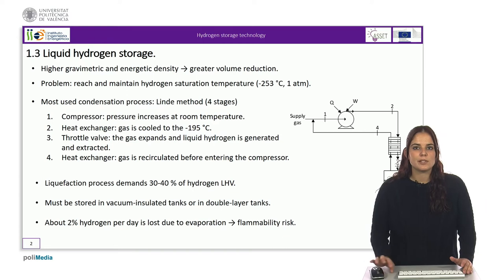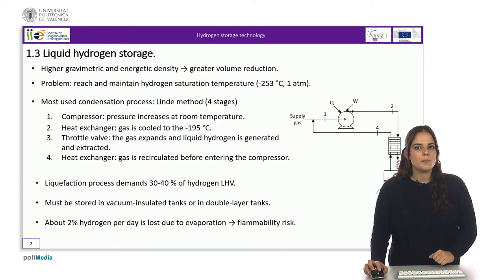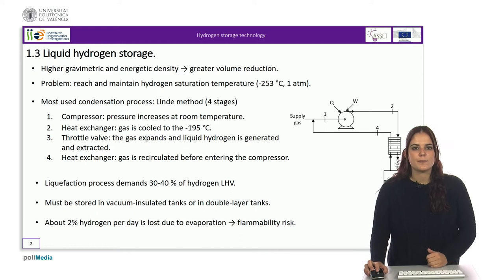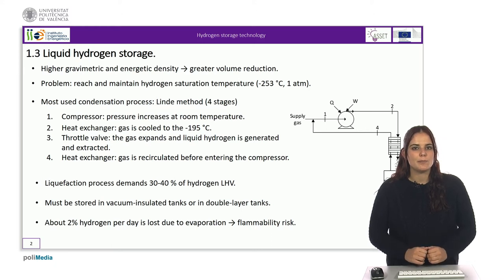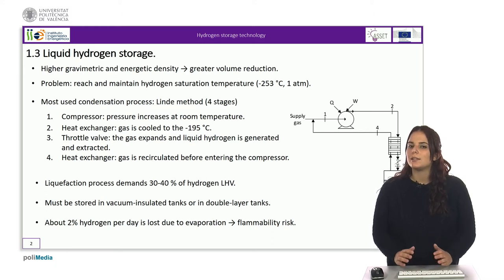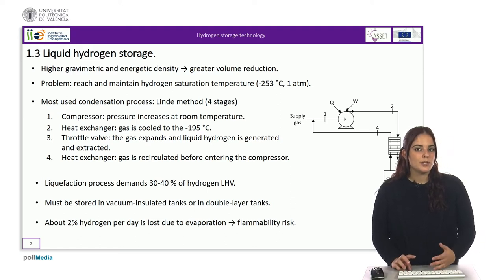The saturation temperature of hydrogen at one atmosphere is about minus 253 degrees Celsius. This is the maximum temperature at which hydrogen exists as a liquid at ambient pressure and must therefore be maintained in order to store it in that state. This presents two problems: to reach this temperature and to maintain it.